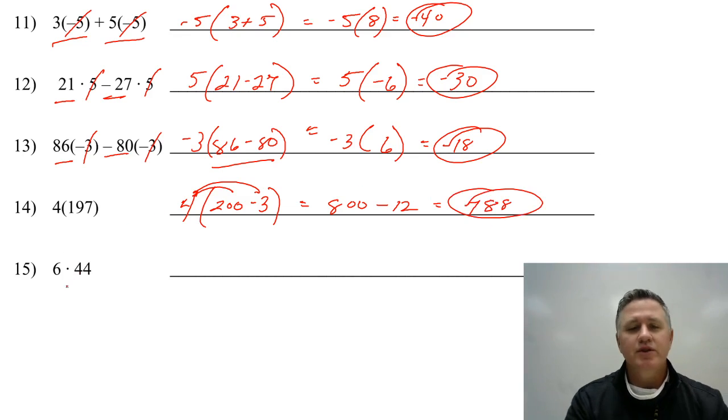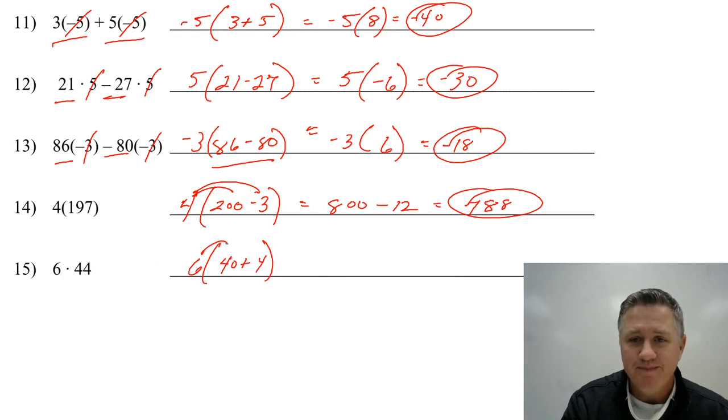And the final problem. You can do this a lot of different ways. You can do 6 times 50 minus 6. I am going to stick with the addition. So, I'm going to say 40 plus 4. That'll get me to 44. So, I wind up getting 240 plus 24, which is 264.